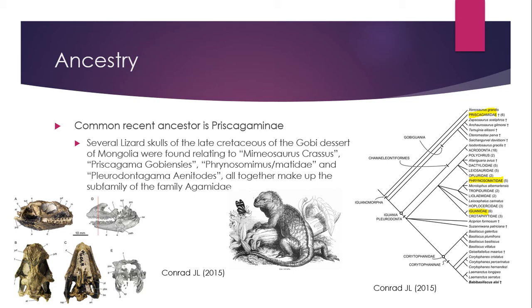The Prisca Agaminae sub-family actually comes from the Late Cretaceous in the Gobi Desert, in an experiment done by Conrad J.L. They made a diagnosis of 81 different species and looked at different scores and the alignments of the mandibles to find that most of the Agaminae species could have come from the Old World, or simply the time before Europe and Asia were one landmass, called Eurasia.